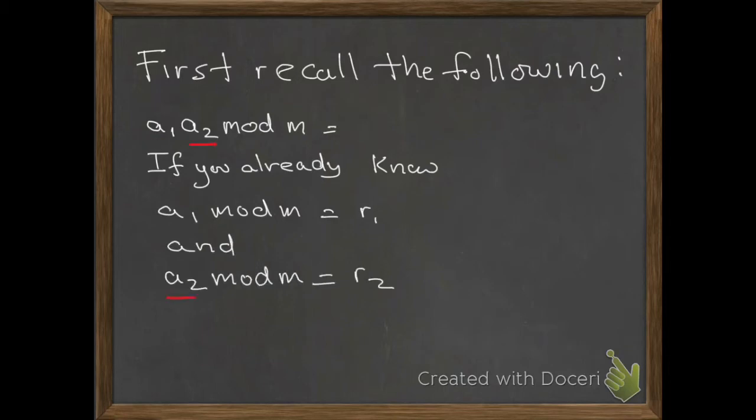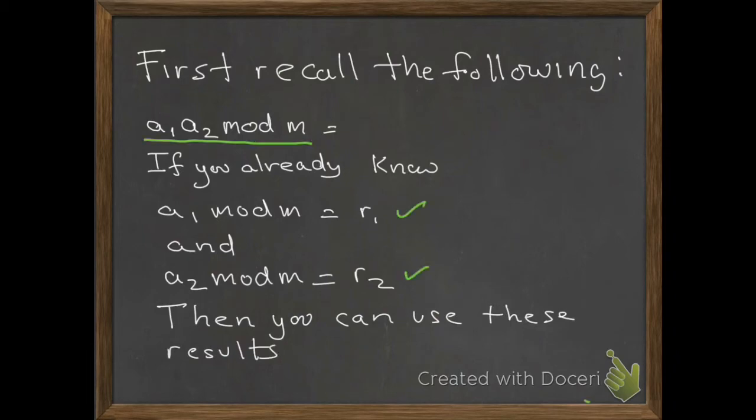and we also know what a2 mod m equals, then our calculation is simplified. We find that a1 times a2 mod m is actually equal to r1 times r2 mod m. So when multiplying two numbers mod m and we already know the intermediate results, we can use that to simplify our calculation. We'll use this in the following example.